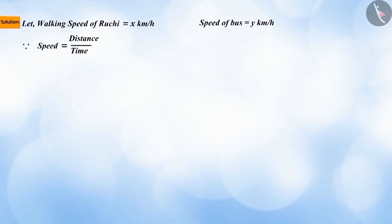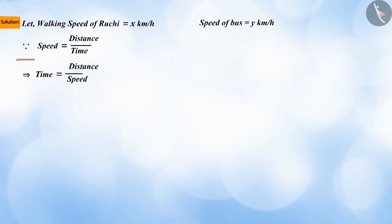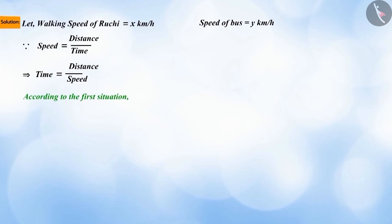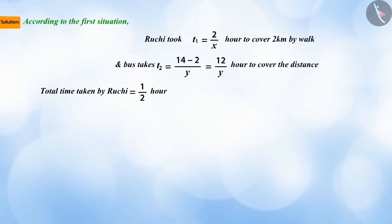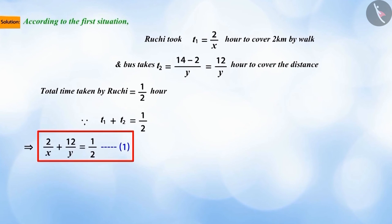Let Ruchi's speed be x km/h and the speed of the bus be y km/h. We know that speed = distance / time, so time = distance / speed. Therefore, according to the first situation, Ruchi will take 2/x hours to walk and 12/y hours by bus to cover the distance. This way, Ruchi's total time t1 + t2 = 1/2 hour to reach home. This gives us equation one.